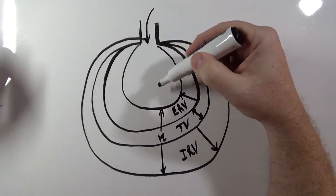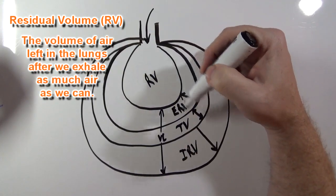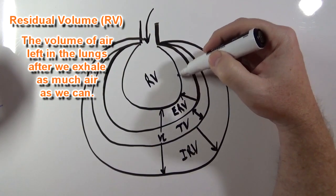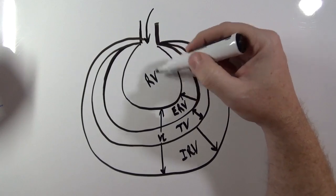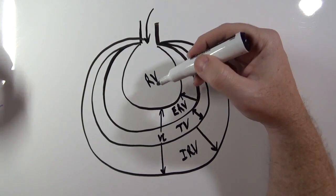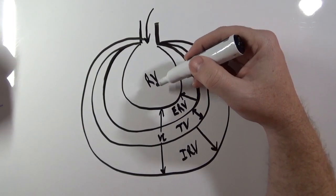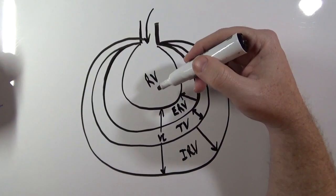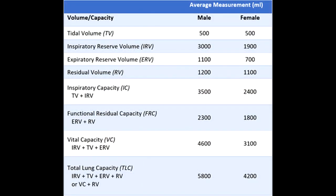This volume of air that's left over in the lungs is the residual volume. Residual volume is the volume of air left in the lungs after we exhale as much air as we can — the lungs shrink down to this size, but there's some air left over. That residual volume of air helps to keep the alveoli open so they don't collapse. If they collapse, we can't get any more air in there. This air left over keeps them open so we can continue to move air in and out of the alveoli and lungs. The average residual volume for a male is 1,200 milliliters, and for a female is 1,100 milliliters.